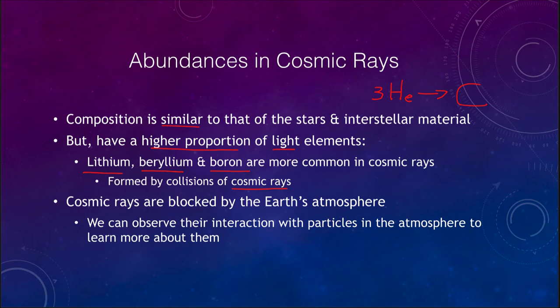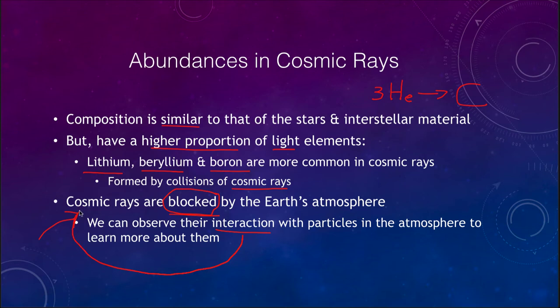Fortunately, cosmic rays are blocked by the earth's atmosphere. How do we detect them from the surface? We can observe their interaction with particles in the atmosphere — when they collide in the upper atmosphere they produce a stream of high energy particles, and we can use those to work backwards and figure out something about the cosmic rays. Another way is to get above the earth's atmosphere to observe them directly.